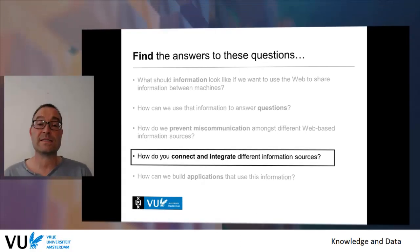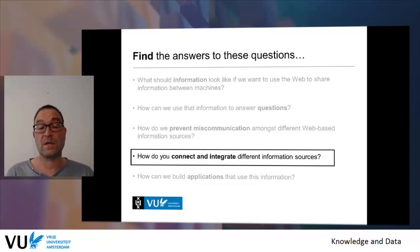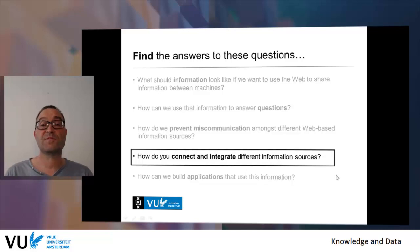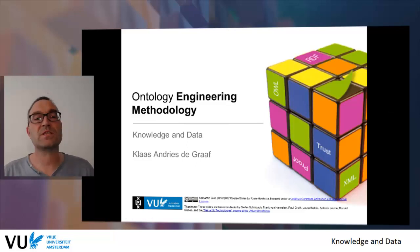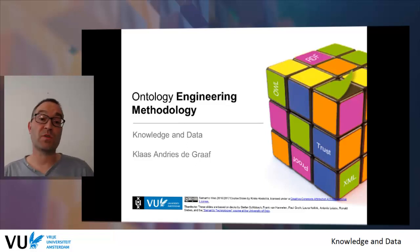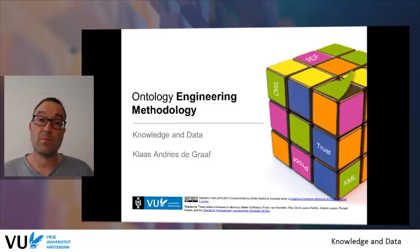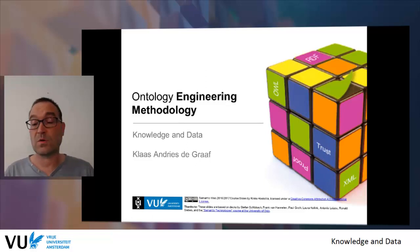The final thing we're going to address in this remaining module is how to connect and integrate different information sources, so that we can build applications that use this information across the different levels we've been discussing. Before we do that, there will also be a discussion on ontology engineering — the methodology behind how to build proper ontologies — which is important when you want to make more expressive statements and integrate data from complex sources.